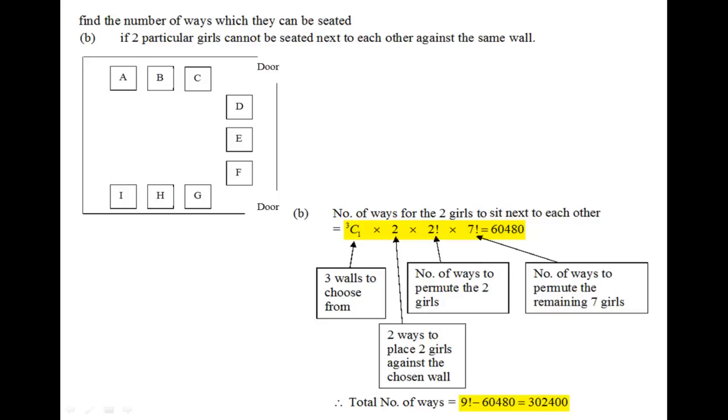In this case we can actually use the complementary method, whereby we take the total number of ways minus away the case whereby the two girls sit next to each other against the same wall. So in other words, we need to go and find out what is the number of ways for the two girls to sit next to each other first.